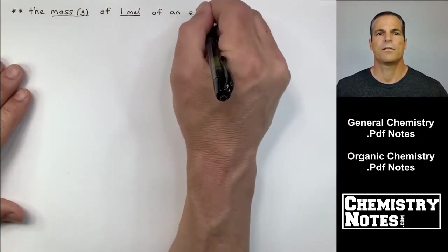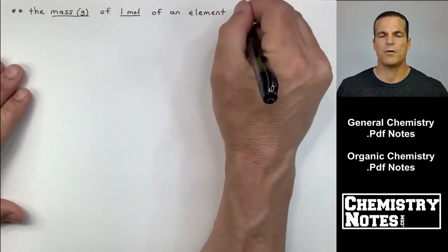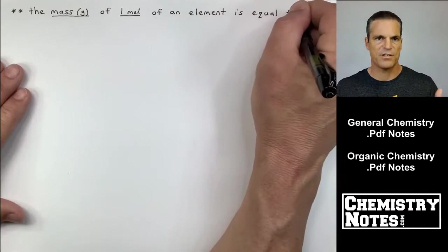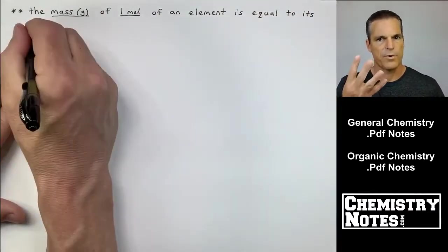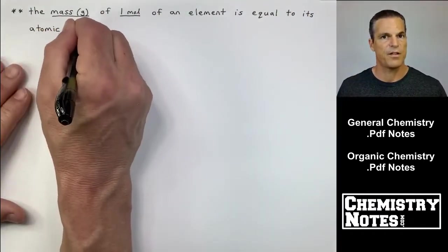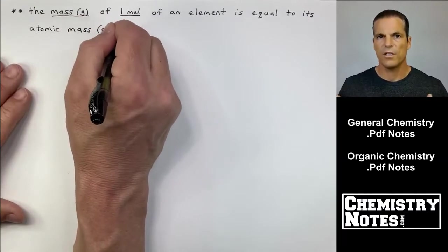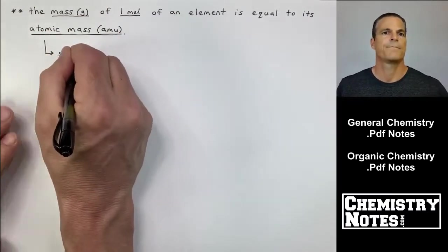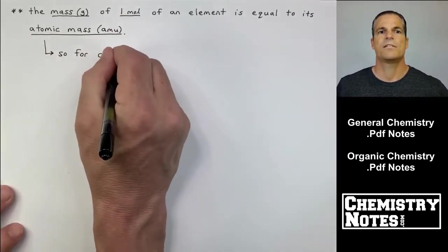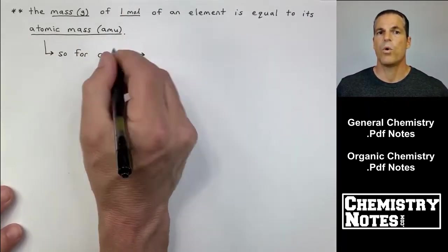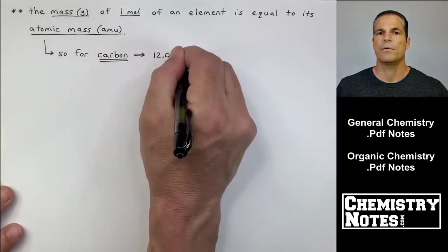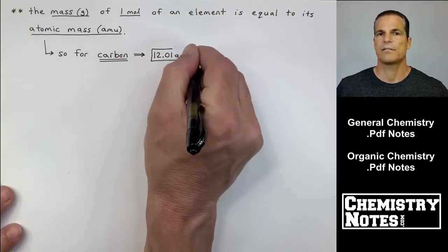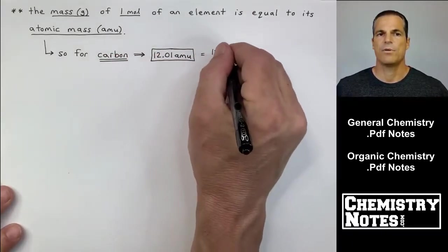All right. So we're at the top of a new page of notes here. Remember, we're just building the foundations before we can start to do these four practice problems that are coming up in this video on the early types of stoichiometric calculations. Now, here it says the mass of one mole of an element on the periodic table is equal to its atomic mass or its AMU.